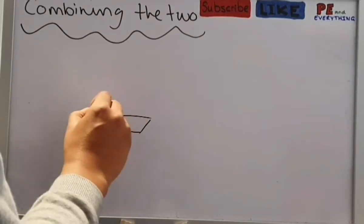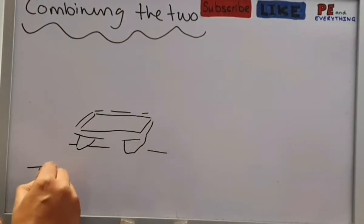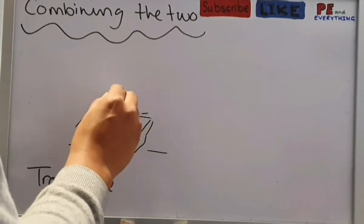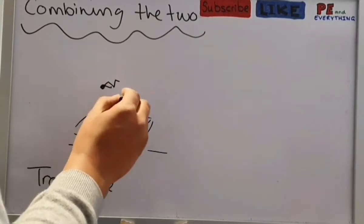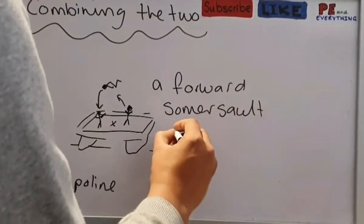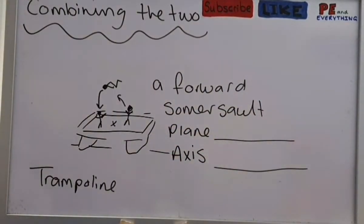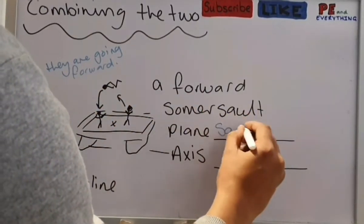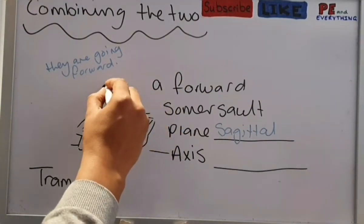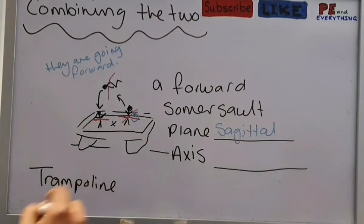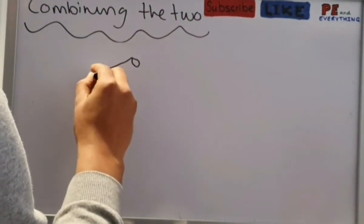So in the GCSEs, they might ask you to combine the two, so you've got to be aware of axes and planes. If I ask the hand to draw me a trampoline, and then an illustration of an individual doing something like a forward somersault, you've got to be able to know which axis and which plane they're moving on. I know that they're going forwards, so if they are moving forwards, then that must be the sagittal plane. So we know that if the skewer would go through their sides, and they're rotating that way, then we know that they'll be moving on the frontal axis. That's the kind of way you've got to understand it.